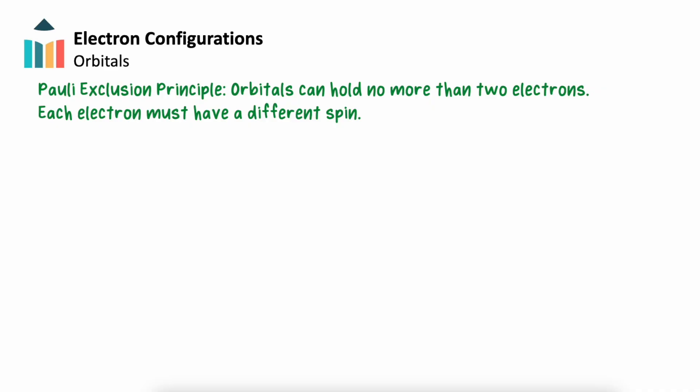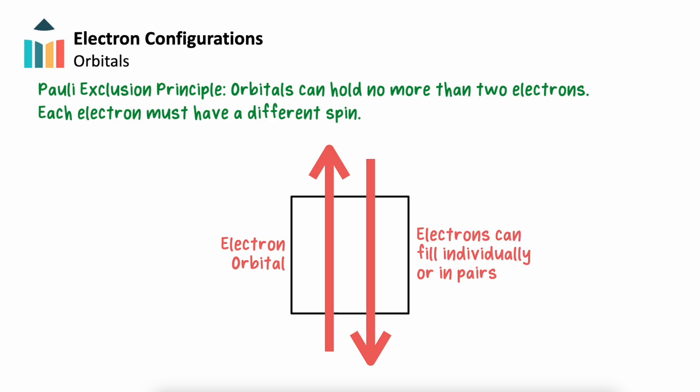We can think of each electron orbital like a box that can hold a maximum of two electrons. Electrons can occupy an orbital individually or in pairs with different spins. This is called the Pauli Exclusion Principle, which we'll come back to later.